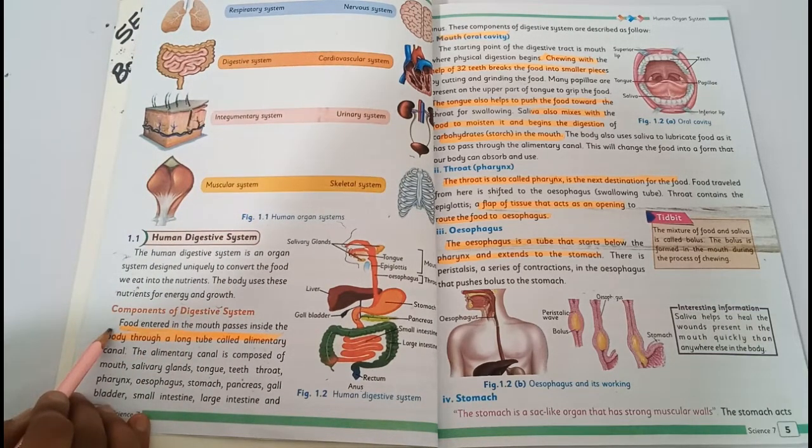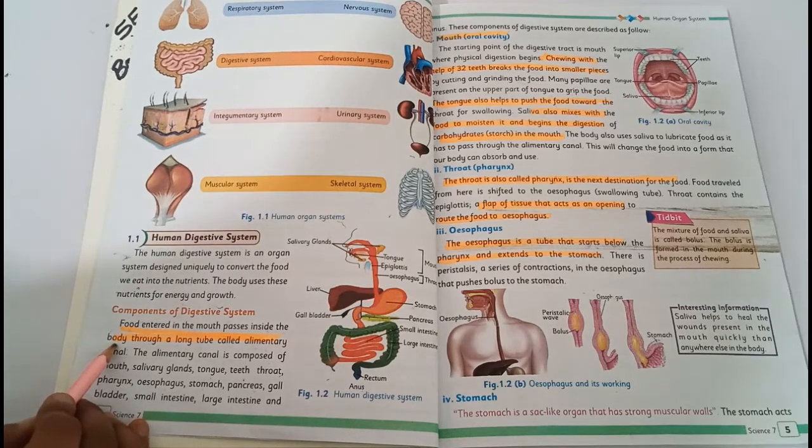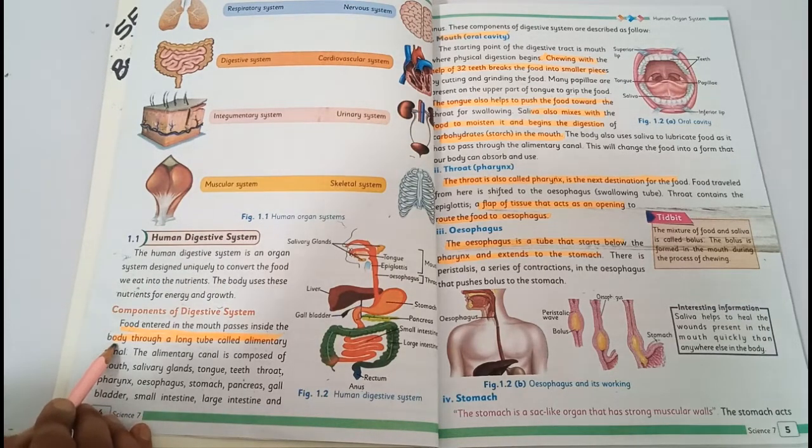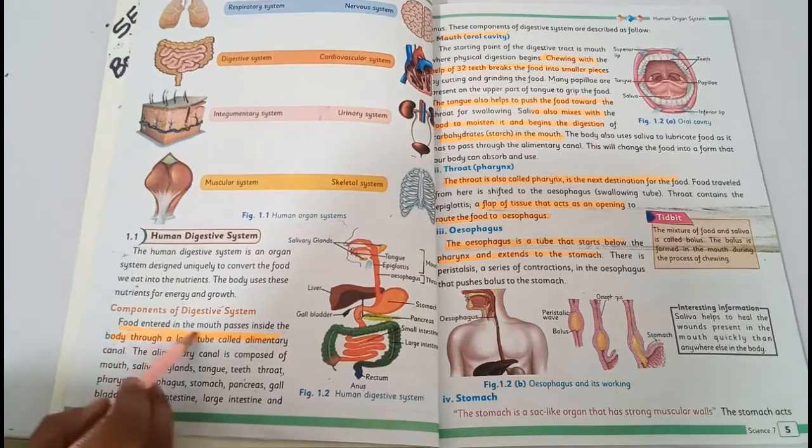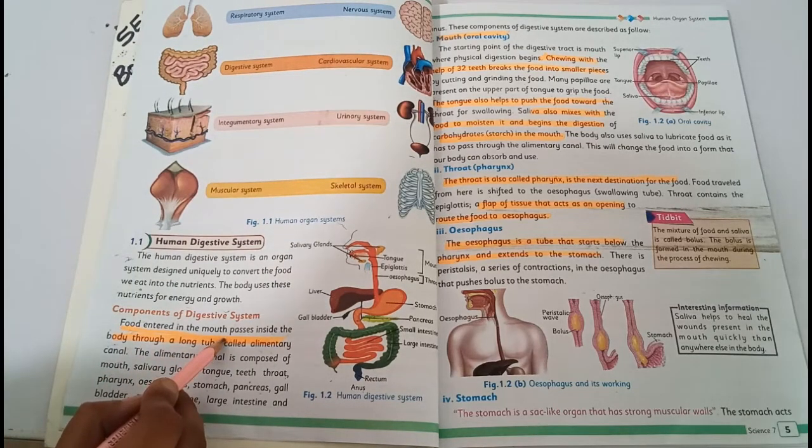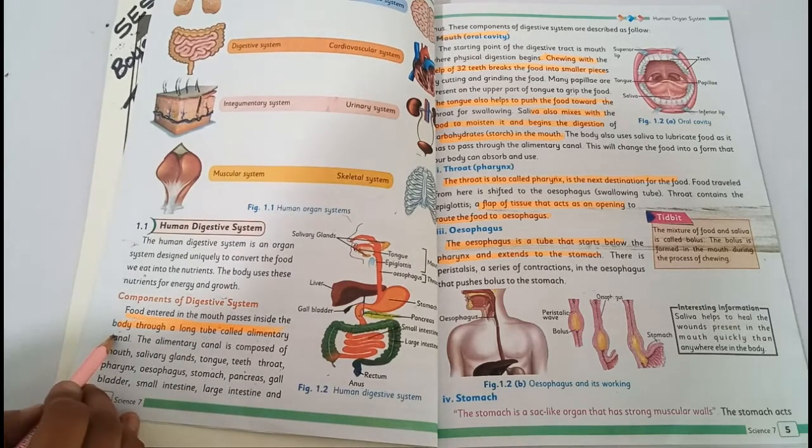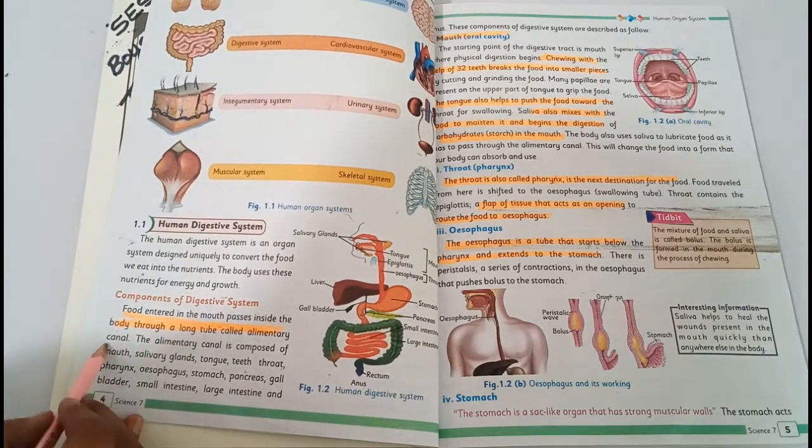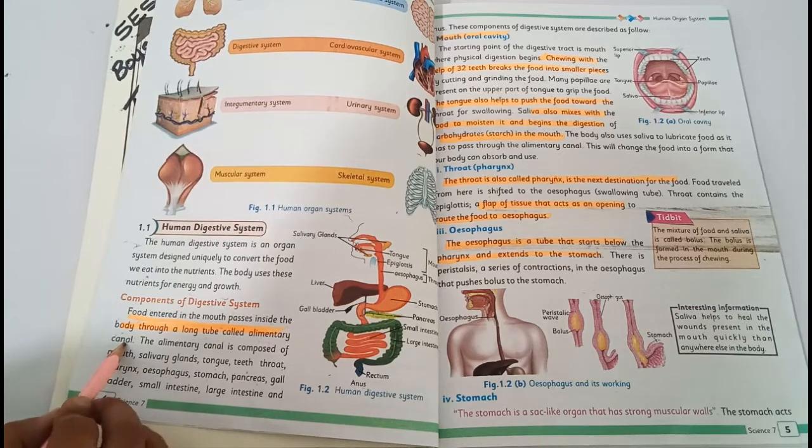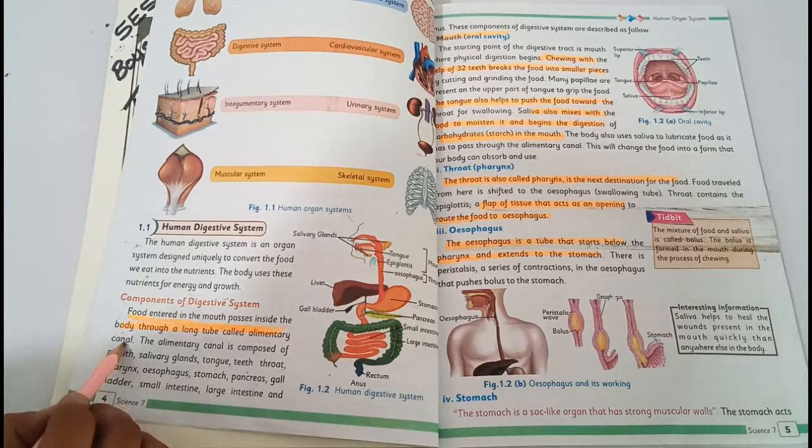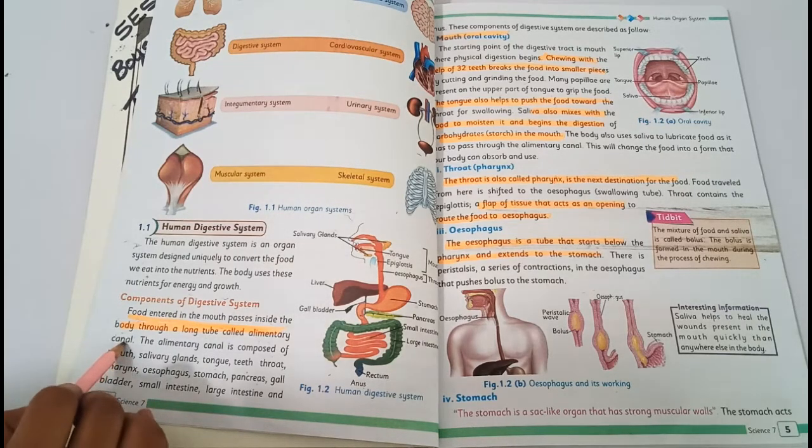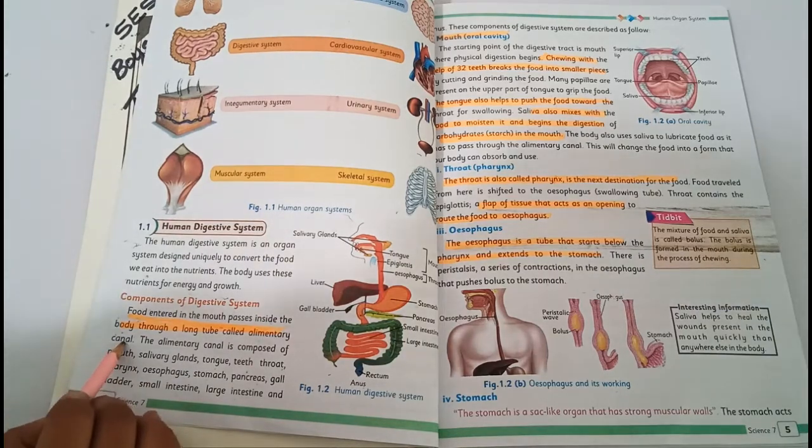First we discuss components of digestive system. Food enters through the mouth. Food entered in the mouth passes inside the body through a long tube called alimentary canal. This is the tube where food is passed and digested. Food is first in the mouth, passes to the stomach, and after further digestion, extra materials are excreted.